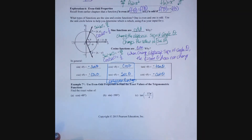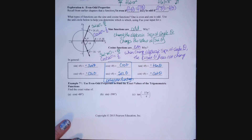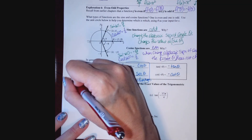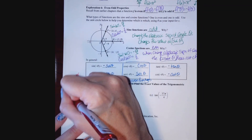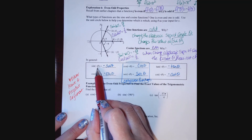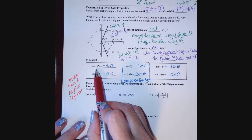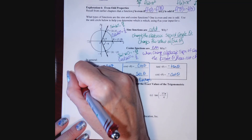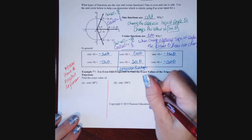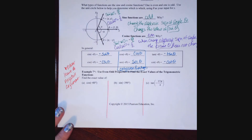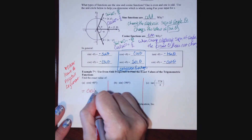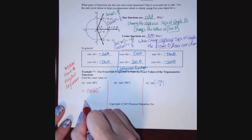Here's why this matters: we never leave an argument negative. We always apply whether the function is even or odd to handle the negative argument. For example, cosine of negative 60 degrees: cosine is even, so it equals cosine of 60 degrees, which is 1 half.